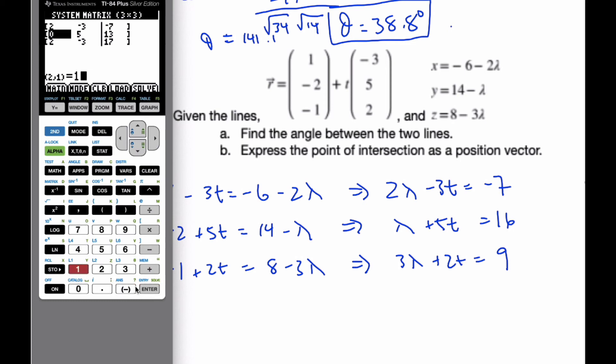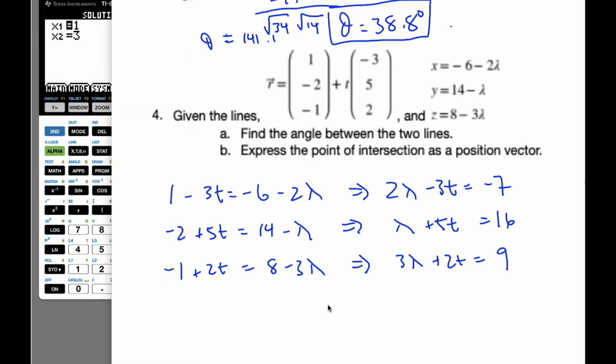I get 1, 5, and 16. And finally, 3, 2, and 9. If I solve the values, I get my lambda equals 1 and my t is equal to 3.